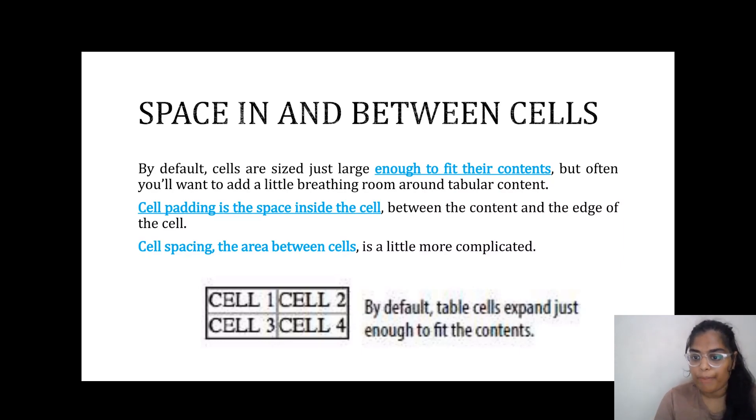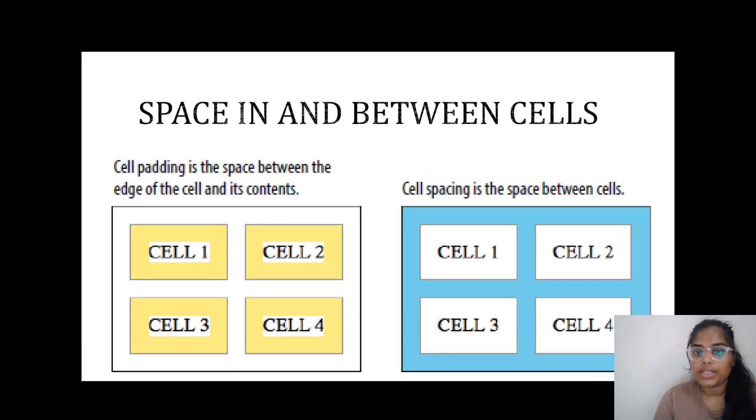Cell padding is the space inside the cell and cell spacing is the area between the cells. Cell padding is between the edges of the cell and its contents.